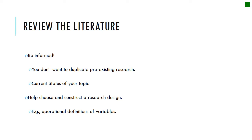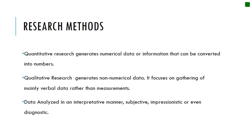What you don't want to do is replicate pre-existing research. You want to know exactly what research has been done on your topic — where are we in moving the ball down the field on this particular topic? Then we have to think about our research design: what are the variables that are going to be in play? Julian is going to talk about the operationalization of these variables.